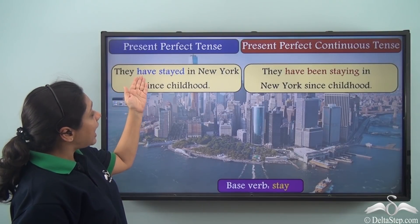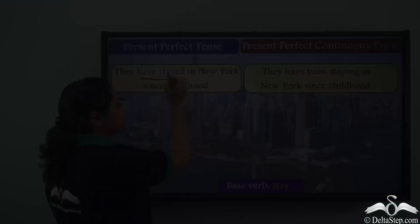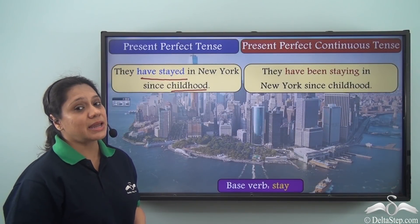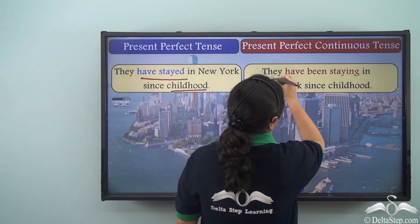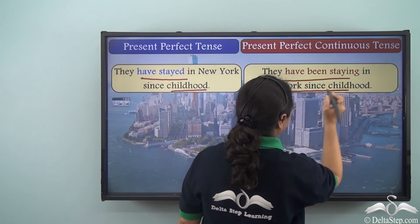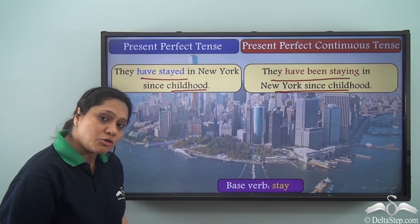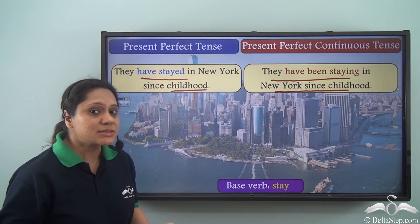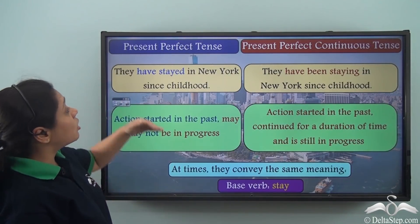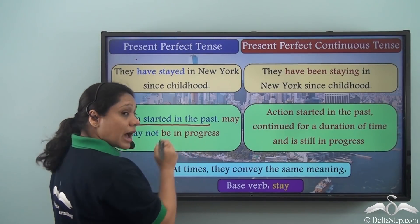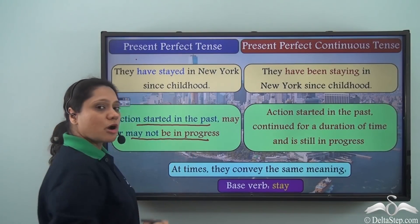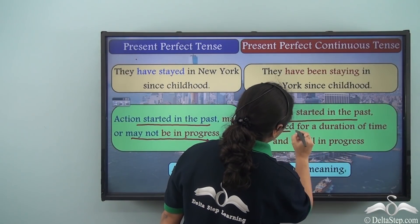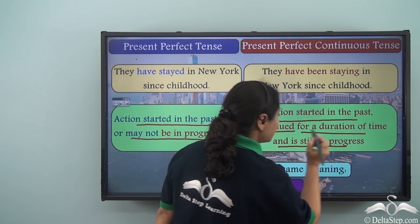For example, 'They have stayed in New York since childhood' means that they started staying in New York in their childhood and they may or may not be staying in New York right now. But when we say 'They have been staying in New York since childhood,' we mean that they started staying in New York in their childhood, continued staying there all the time, and are still staying in New York. So in this case also, the present perfect tense shows that an action started in the past and may or may not be in progress, whereas the present perfect continuous tense always shows the action started in the past, continued for a duration of time, and is still in progress.